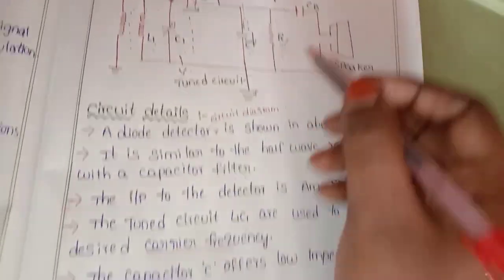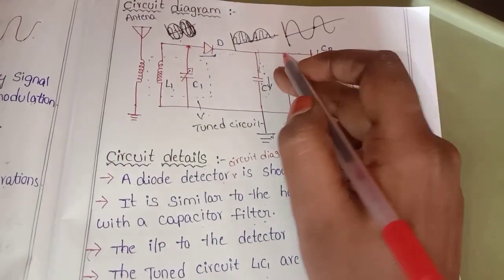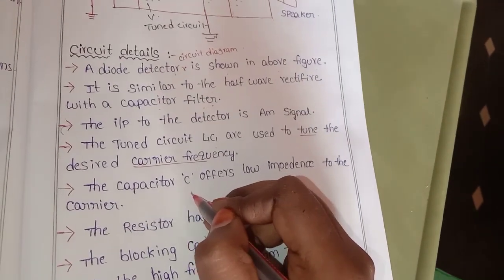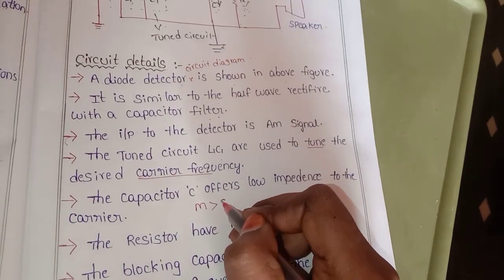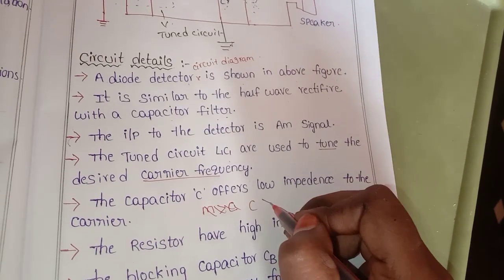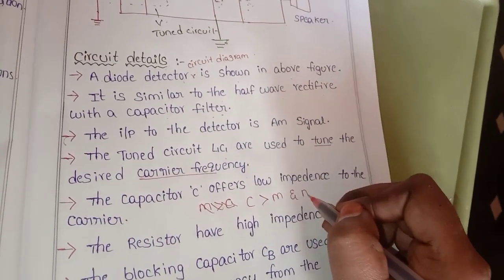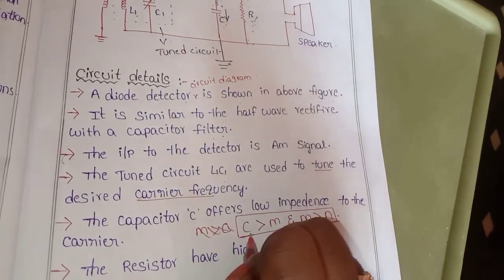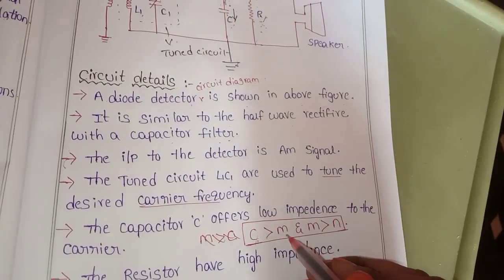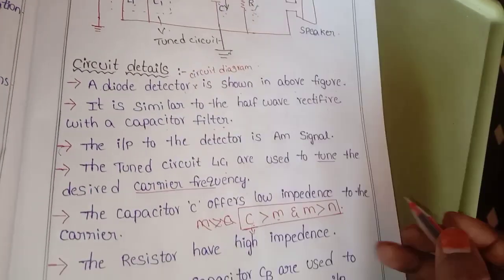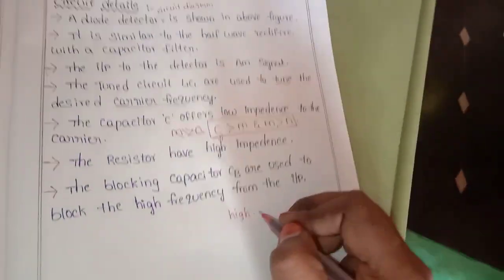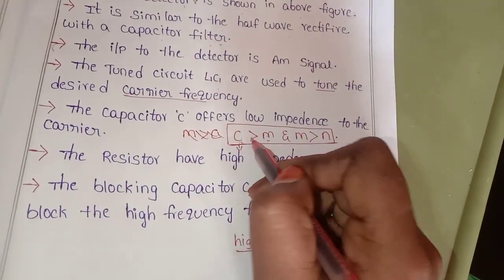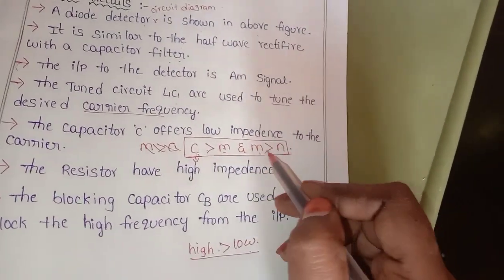The capacitor C offers low impedance to the carrier signal. The load output condition is set accordingly. The carrier signal must be greater than the message signal, and the message signal must be greater than the noise. Carrier signal is high frequency; message signal is audio frequency. High frequency is greater than low frequency. The carrier frequency is greater than the message signal, and the message signal is greater than noise.